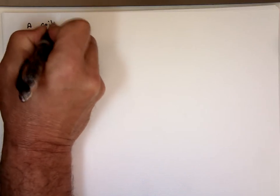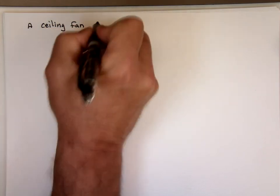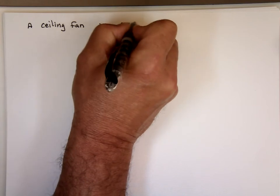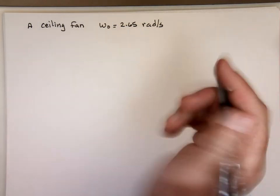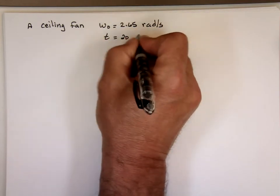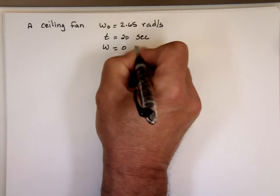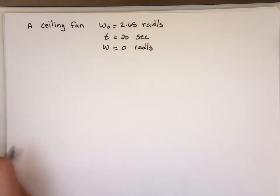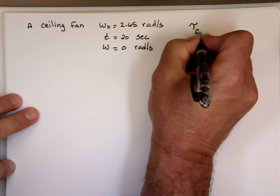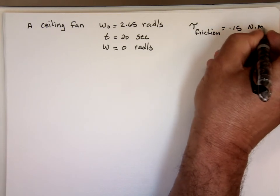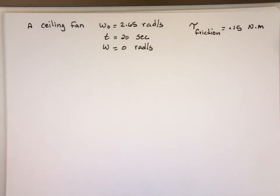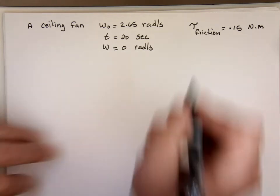Let's take a ceiling fan. It has initial speed running at 2.65 rad per second. You decide you don't want it anymore running, you shut it off. Let's assume it took 20 seconds to make it stop completely. So, the final angular speed is 0. The reason the fan slows down is the friction. Let's assume the torque due to friction is equal to negative 0.15 Newton meter. Can you tell me what the inertia of that is?